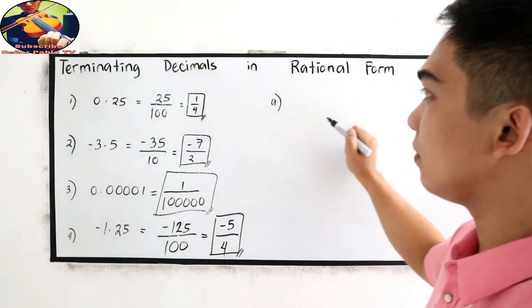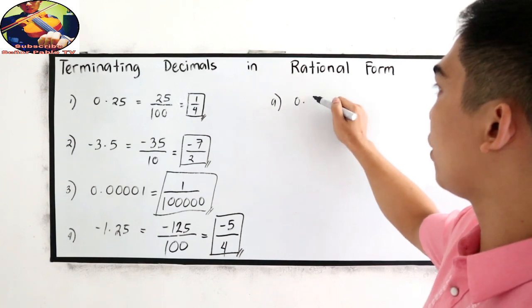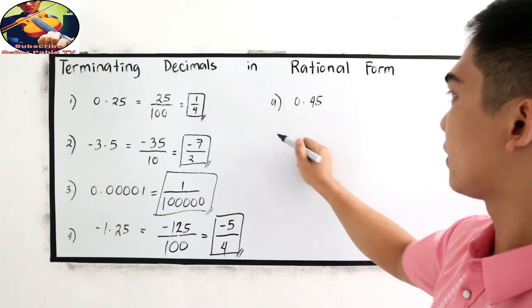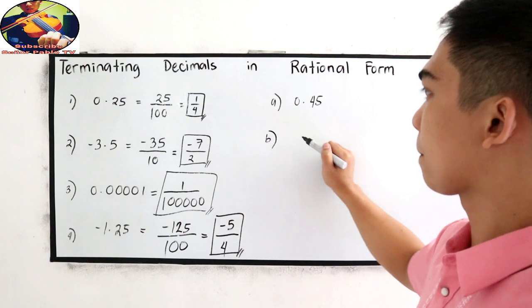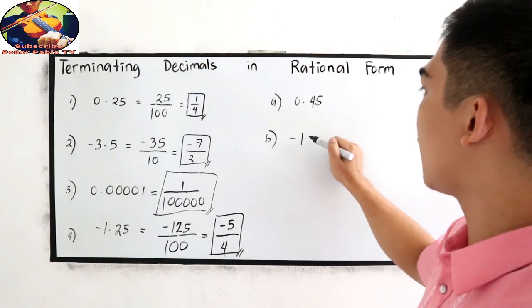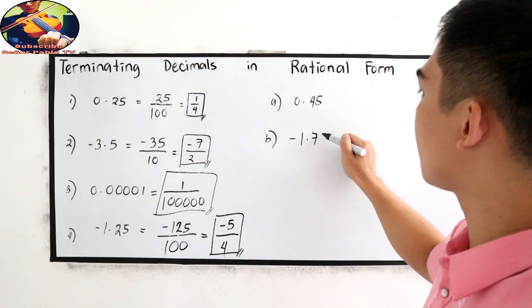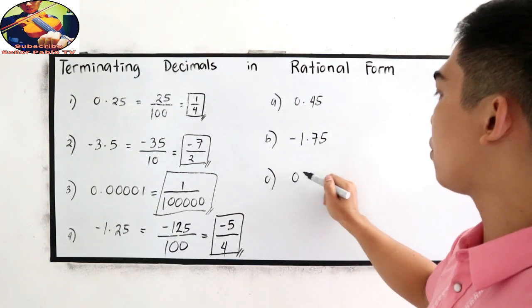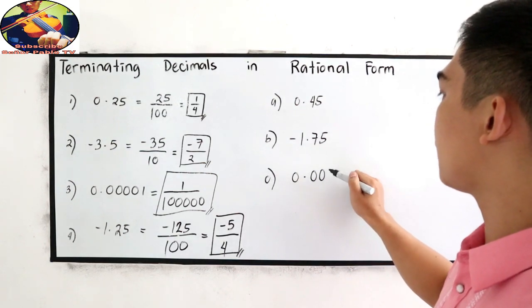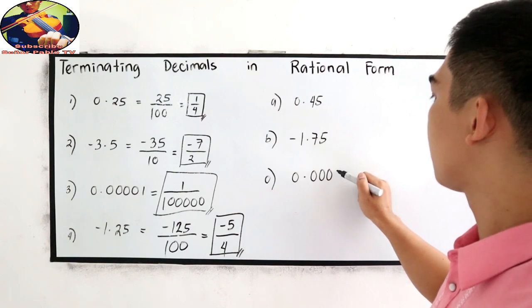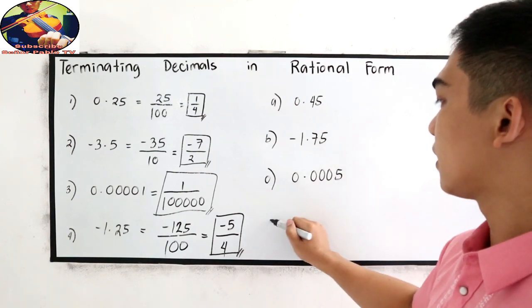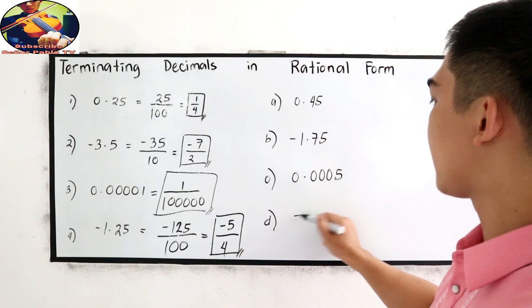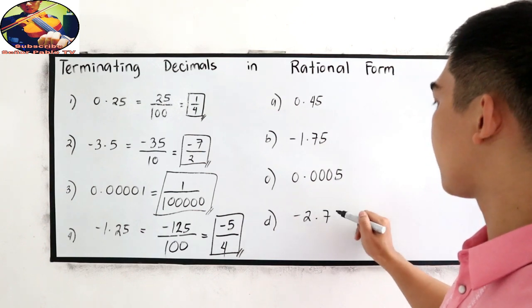Letter A, 0.45. Letter B, negative 1.75. Letter C, 0.0005. Letter D, negative 2.70.